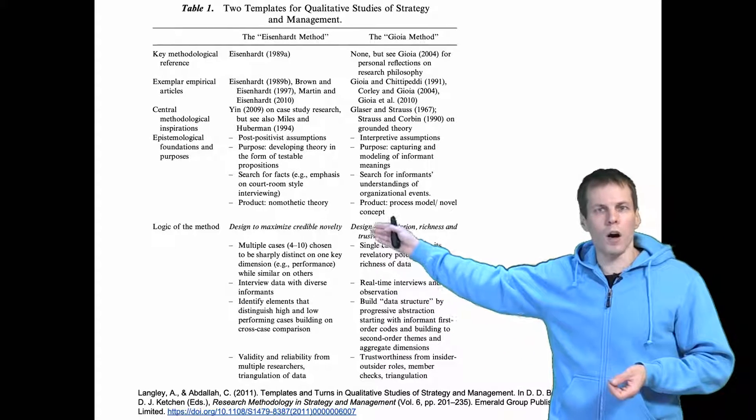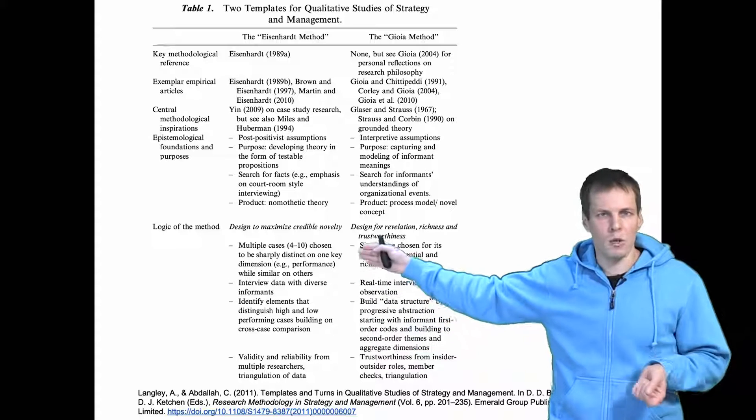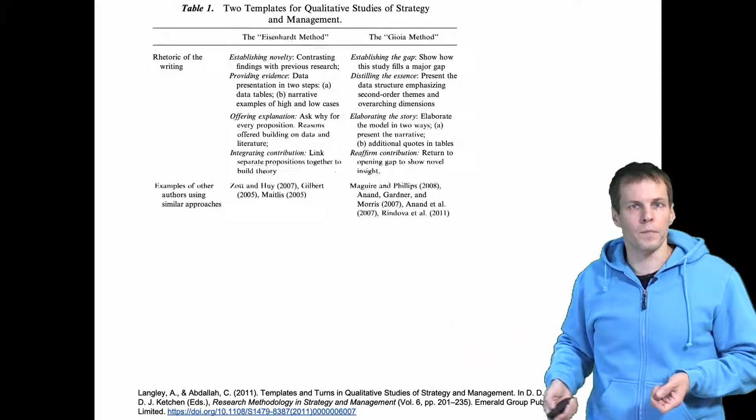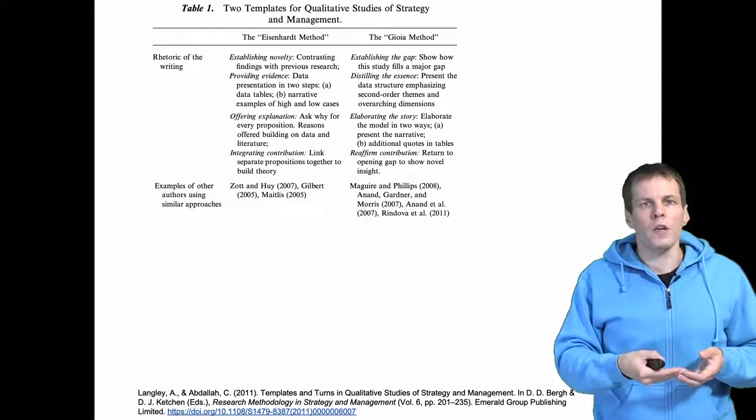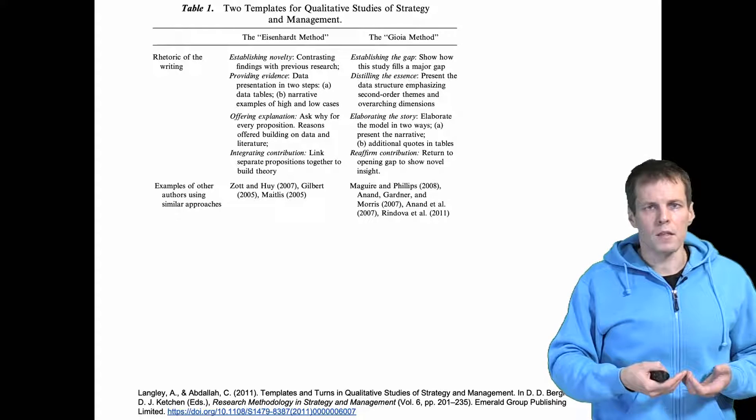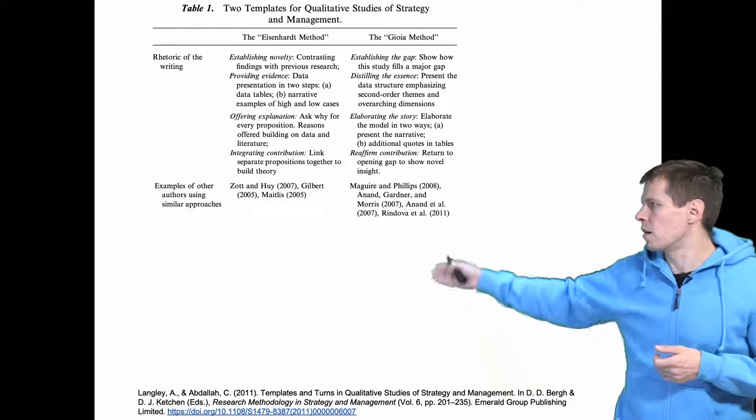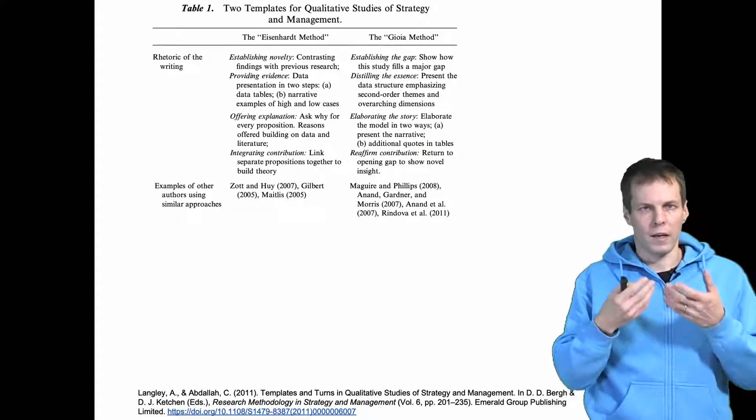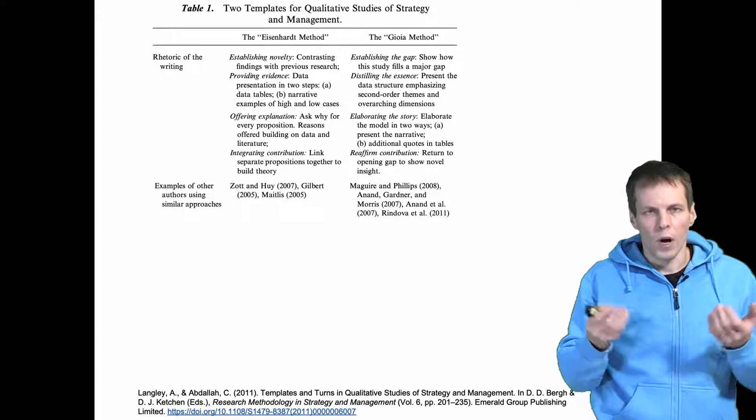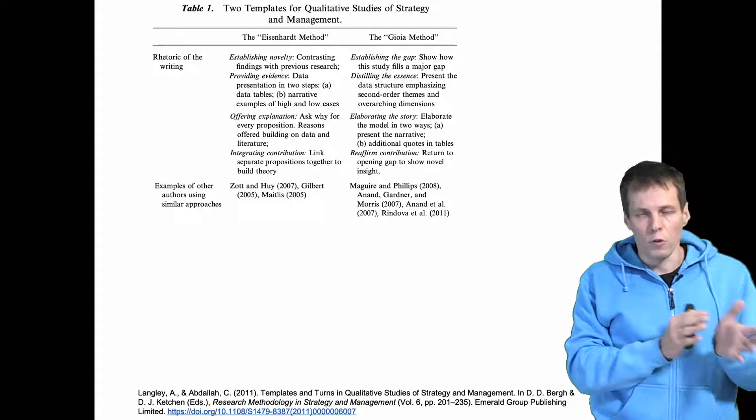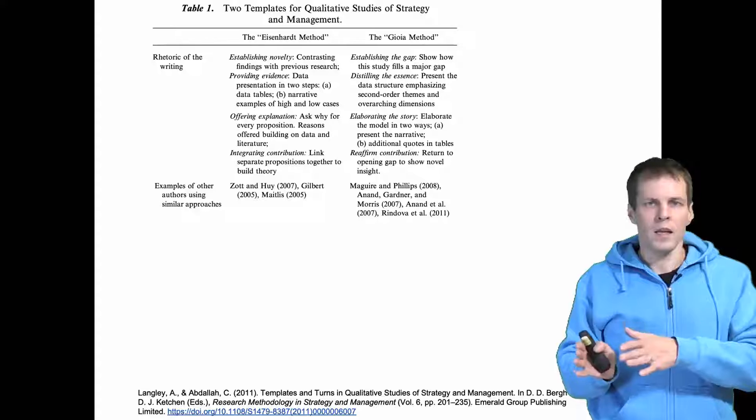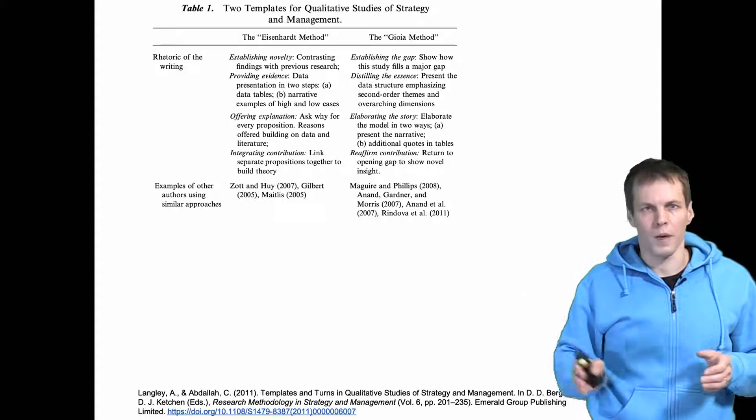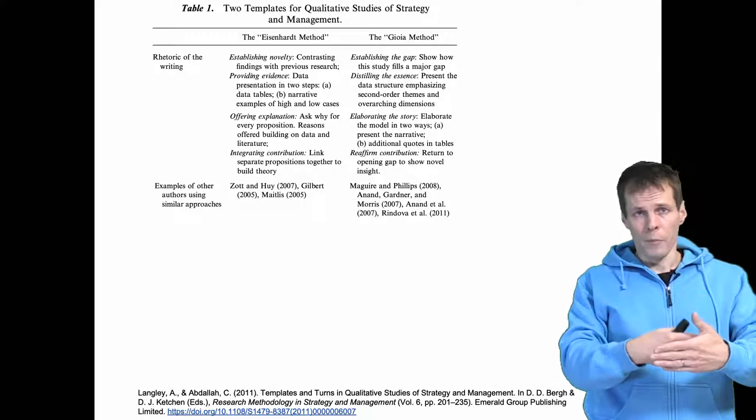So this is much more about objective description and explanation of reality instead of being about people's interpretation of that reality. These also differ in how you report the results and how you write the paper. In Eisenhardt's method there is this quantitative focus. Kathleen Eisenhardt's papers quite often classify cases according to dimensions as being high and low. For example you can classify the cases into high-performing companies and low-performing companies or companies that are in the middle.